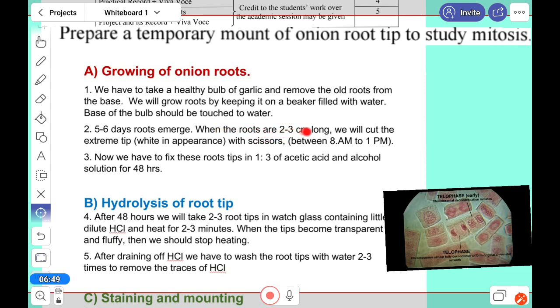When the root is two to three centimeters long, then we will take it out. An extreme tip, that means one centimeter from the tip, with scissors we'll cut it, and it should be between 8 a.m. to 1 p.m., the morning time. Now next, we will fix it in one is to three acetic acid and alcohol.